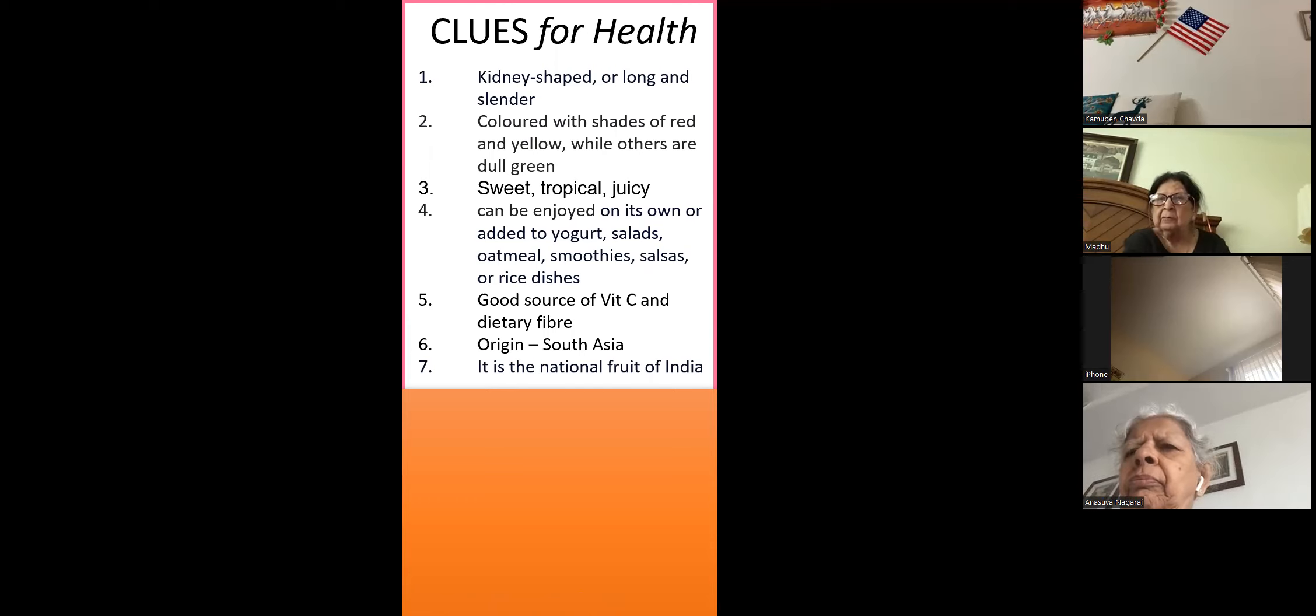So this time, both fruits and cereals we are going to play. The pink color represents the fruit and the cream color border represents cereals. Here it is a pink color border, so it is a fruit. The first clue: kidney shaped or long and slender, colored with shades of red and yellow while others are dull green. Sweet, tropical, juicy in taste. Origin is South Asia. It is the national fruit of India.